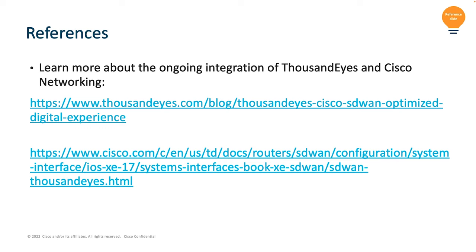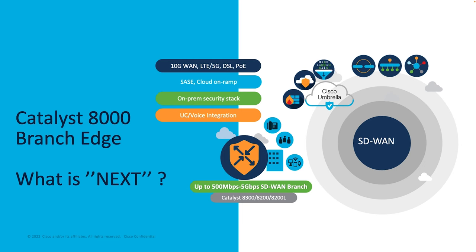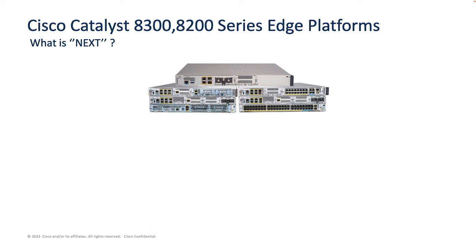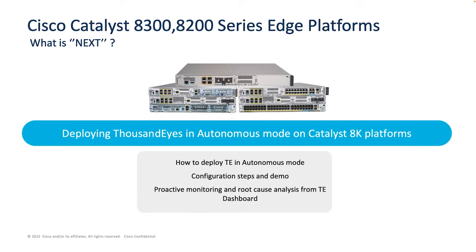Here are some important references — links that provide more detail about ThousandEyes integration in SD-WAN for optimized digital experience and cloud-level monitoring and analysis of your infrastructure, applications, and services. I will be uploading more videos on Cisco Catalyst TV. Coming up next is ThousandEyes deployment in autonomous mode — how to deploy ThousandEyes in traditional routing use cases using CLI commands, since VManage flexibility is not available for traditional routing today.